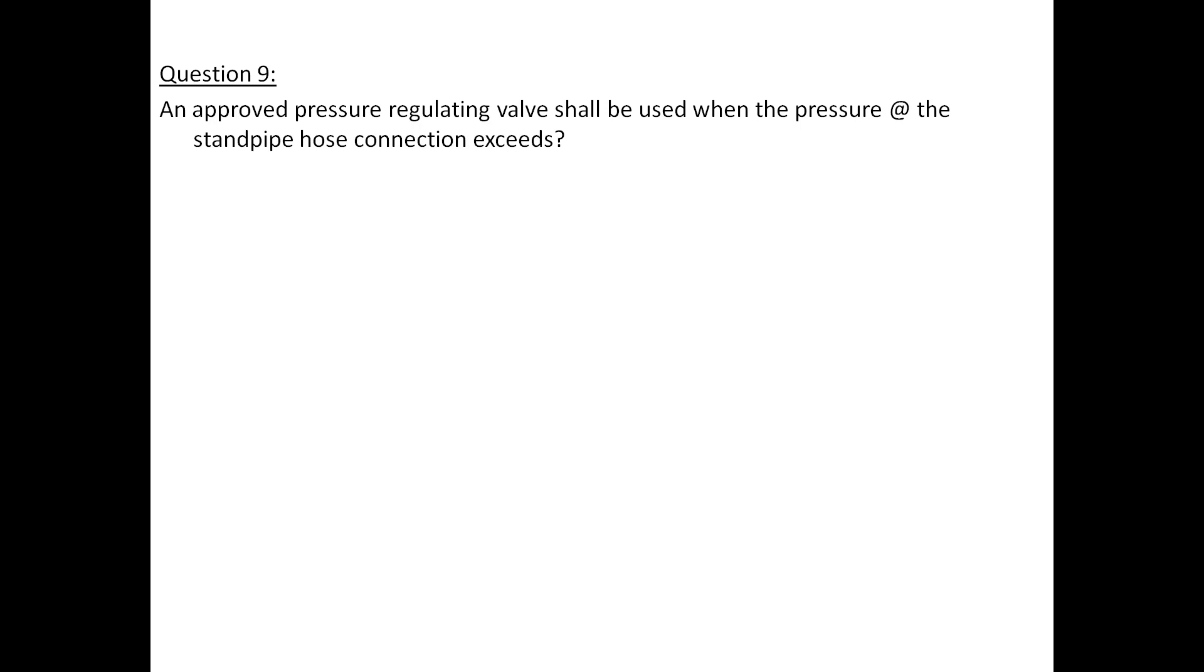Question 9: An approved pressure regulating valve shall be used when the pressure at the standpipe hose connection exceeds what PSI? The answer for question number 9 is 175 PSI for 1.5 inch and 2.5 inch hose connections. Refer to NFPA 14 page 14-18 sections 7.2.31 and 7.2.3.2.